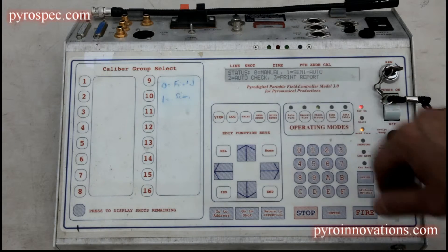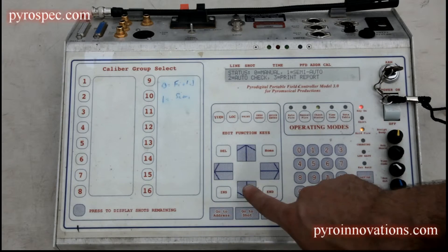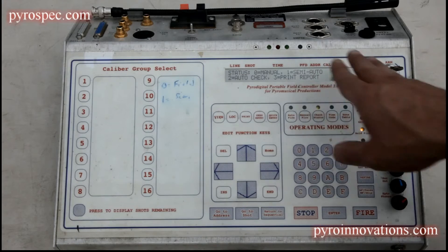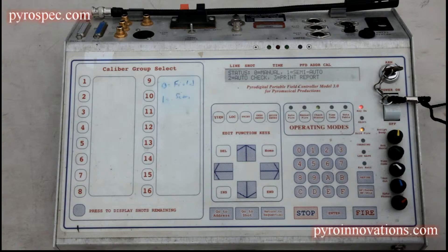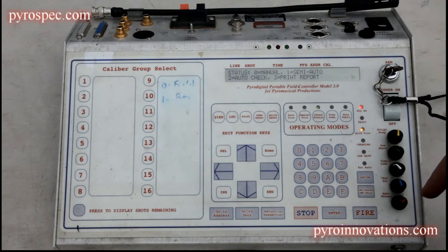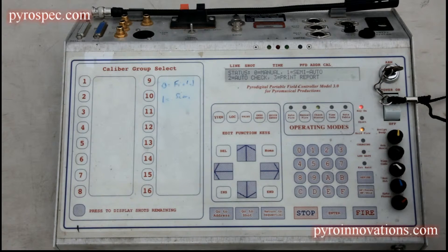The difference being in semi-auto mode you have to manually scroll through each field module. It basically does a status check per module. With auto check, it'll automatically go through, check one module, then go to the next one, check another module. You can't really see what the issue is when in auto mode, but it'll beep at you if there's a continuity issue on that particular module.